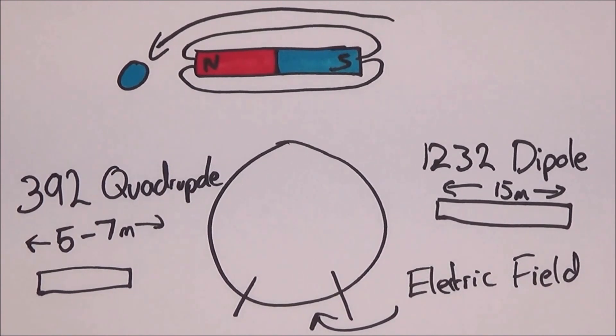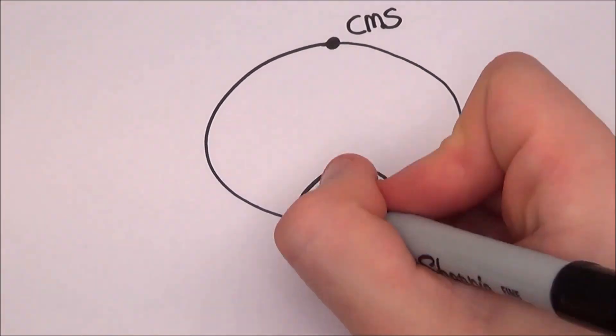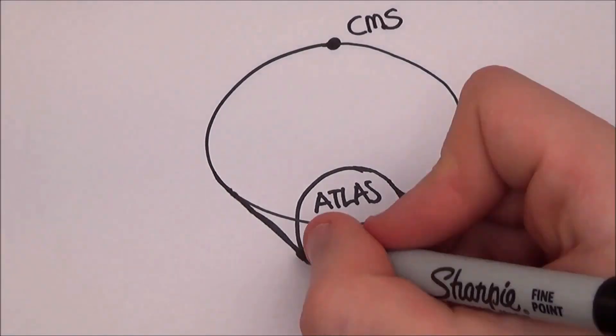The LHC actually has 1,232 dipole magnets 15 meters in length which bend the beams, and 392 quadrupole magnets which are 5-7 meters in length which focus the beams. It is the strength of the magnets and the radius of the circle which will determine the maximum energy you can have.